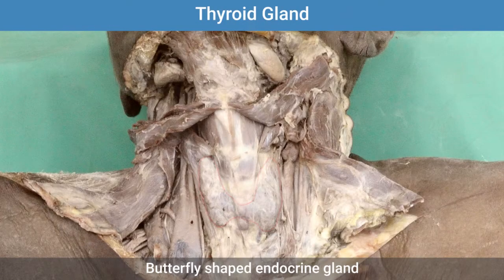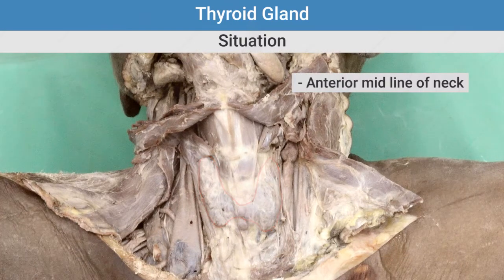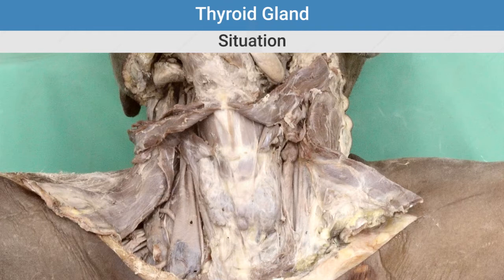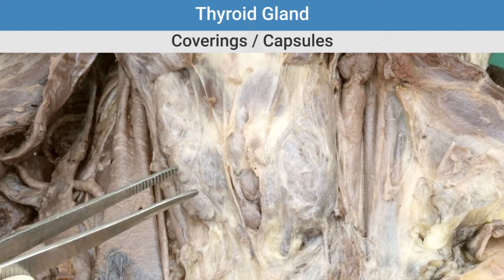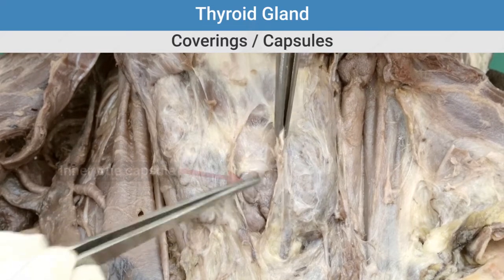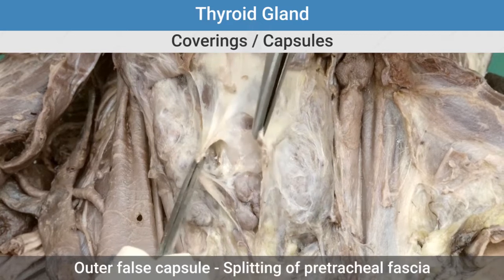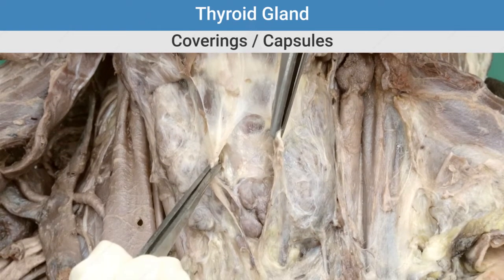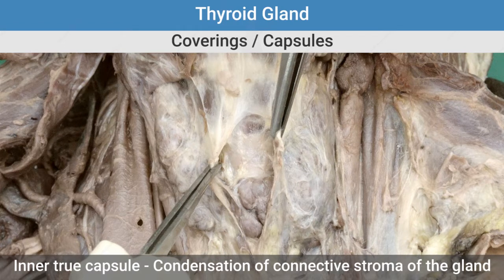The thyroid gland is a butterfly-shaped endocrine gland situated in the anterior midline of the neck, opposite to the 5th, 6th, 7th, 8th cervical vertebra and 1st thoracic vertebra. It is a highly vascular endocrine gland situated in front of the neck. The thyroid gland is covered by two capsules: an outer false capsule derived by splitting of the pretracheal fascia, and an inner true capsule formed by the condensation of fibrous connective tissue stroma of the thyroid gland.